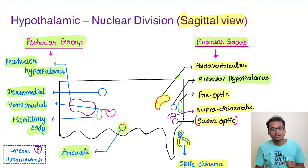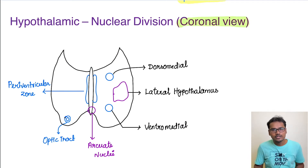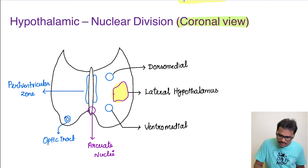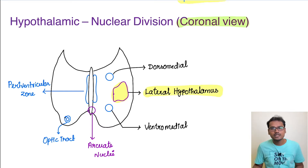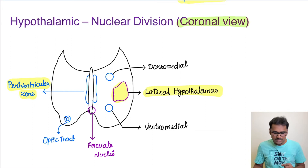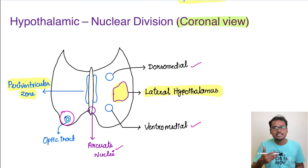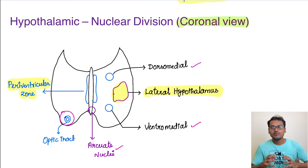There is also a larger nucleus not shown in the sagittal view but very important — the lateral hypothalamus. In the coronal view, we can see the lateral hypothalamus occupying a large portion, and surrounding the ventricular region is the periventricular zone or periventricular nuclei. The dorsomedial, ventromedial, arcuate nuclei, and optic tract are also marked here.